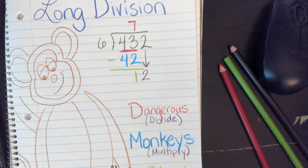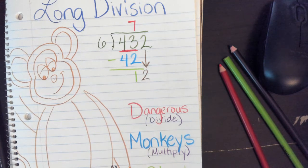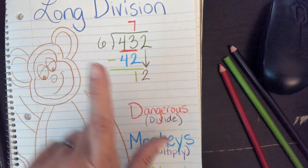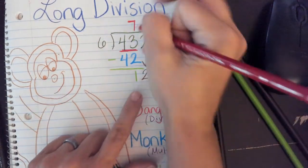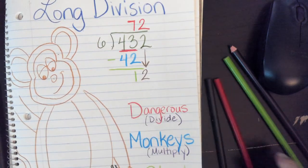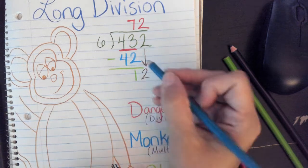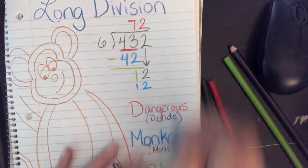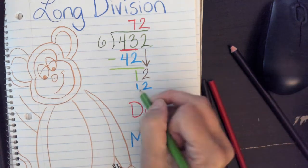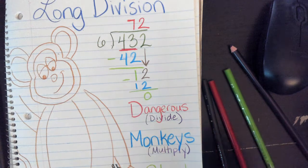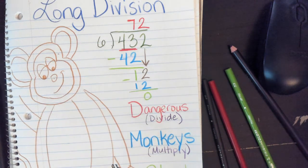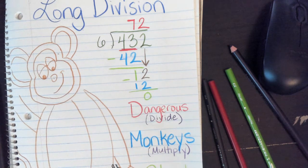These dangerous monkeys steal bananas all the time, so now I just do the whole thing again. I go back to D for divide — 6 goes into 12 two times. Then I multiply again: 6 times 2 is 12. Then I subtract again: 12 minus 12 is 0. So I don't have a remainder, and I know that 6 goes into 432 seventy-two times.